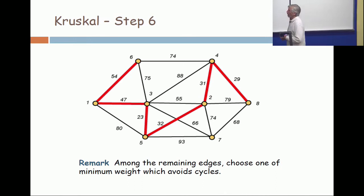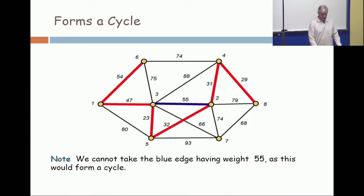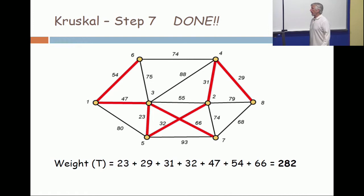Okay. Now, what edge will I wind up taking? I will take the edge from 3 to 7, which is weight 66, and I get an answer of 282, which is a heck of a lot better than the 400 and something that was on an earlier slide.